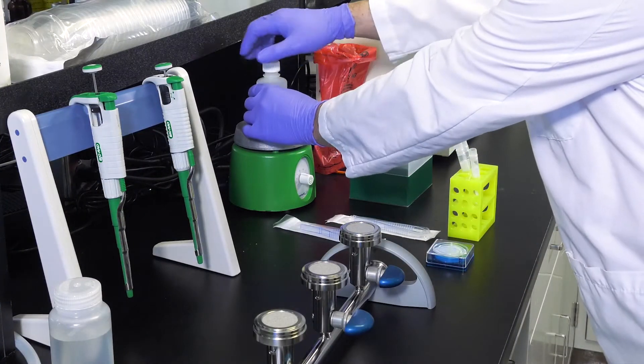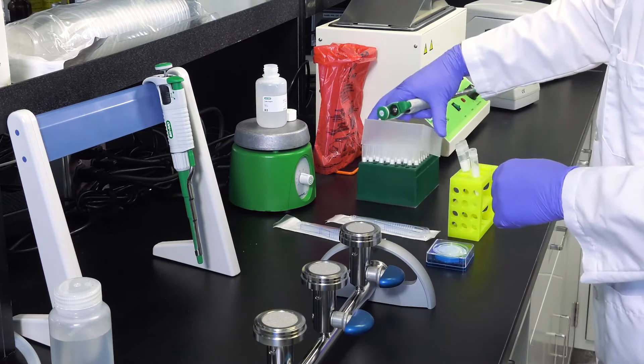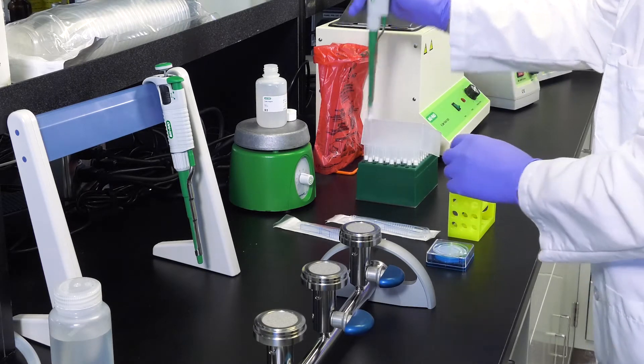First, pipette two milliliters of R1 solution into a cryotube. The R1 reagent must be continuously stirring on a magnetic stir plate.